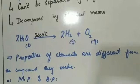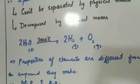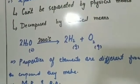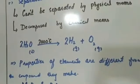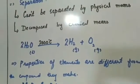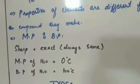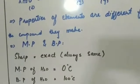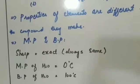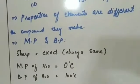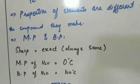The next important property is that the properties of the individual elements are different from the compound they form. Water is made up of hydrogen and oxygen, both of which are gases with completely different properties. When they combine, they form liquid water, which has completely different properties — so the individual properties of hydrogen and oxygen are lost. Another key property is that the melting and boiling points of compounds are very sharp — always exact. The melting point of water is 0°C and the boiling point is 100°C, and it will always remain the same for pure water.